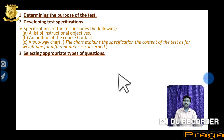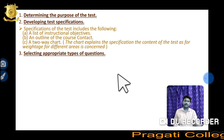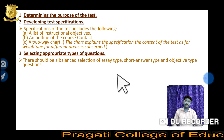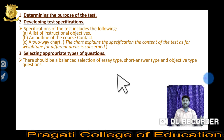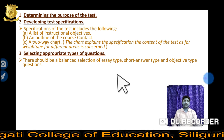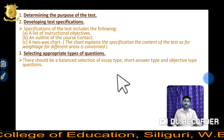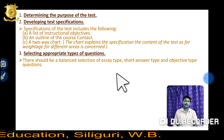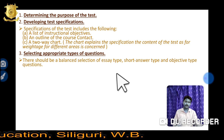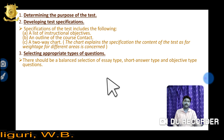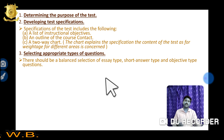Next, selecting appropriate types of questions. You have to select the questions. If you have 3 subunits, you have to give questions accordingly — some will be short type questions, some will be long answer type questions. If you have one unit, then you will give very short type questions or objective type questions. This selection has to be done carefully.